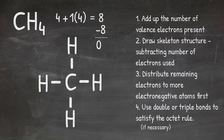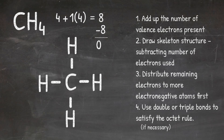Step three says to distribute the remaining electrons to the more electronegative atoms first, but I don't have any more electrons to distribute, so I skip this step. Step four says to use double or triple bonds to satisfy the octet rule. The octet rule tells us elements are satisfied with eight valence electrons, with the exception of hydrogen and helium which only need two. Looking at the structure, each hydrogen has two electrons from its single bond, and carbon has a total of eight electrons from its four single bonds. Every element is already satisfied, so I don't need any double or triple bonds. This is the structure for CH4.